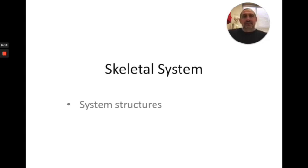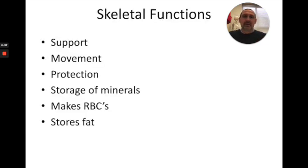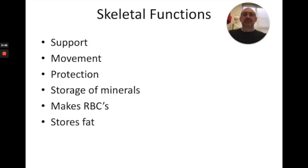This video is about skeletal system structures, but to understand why those structures are even there, we have to understand some of the things that the skeletal system does. Because in anatomy, structure and function are very closely related — these two things are working together. We have to know what the skeletal system needs to do so we can have the right tools for that job. Some of the skeletal system functions involve support and movement, like muscle attachment pulling on bones.